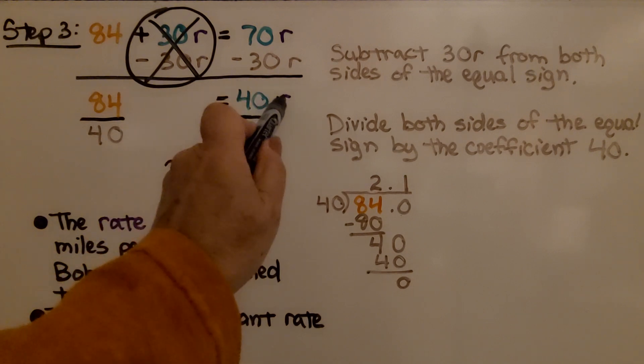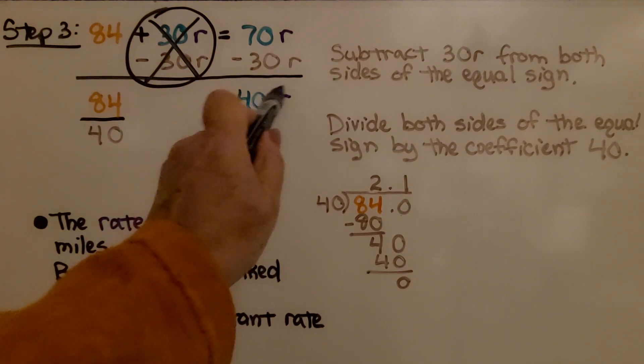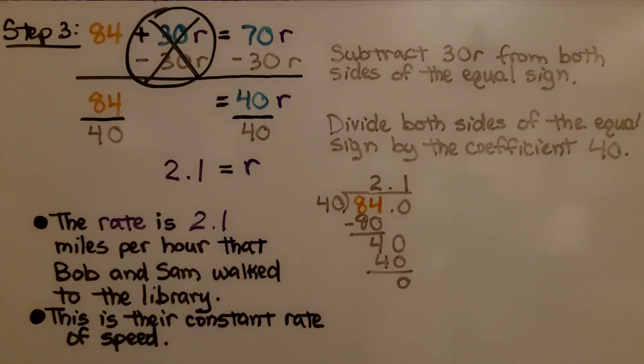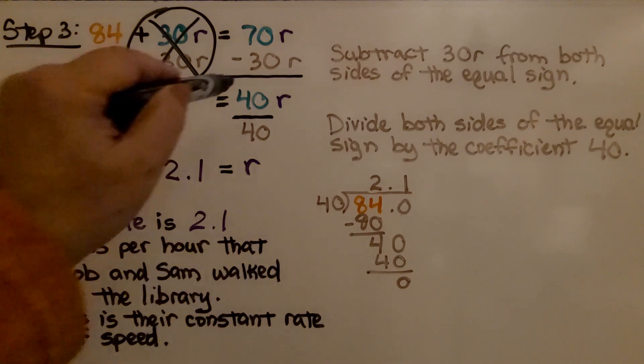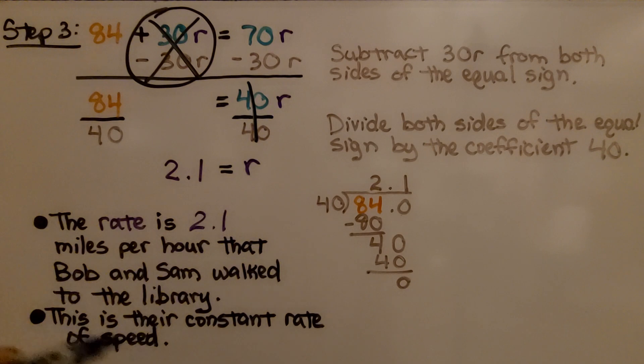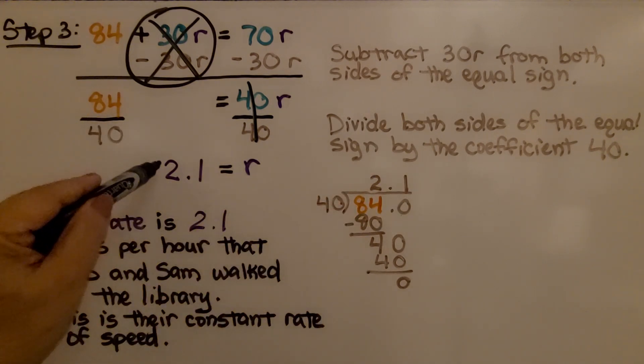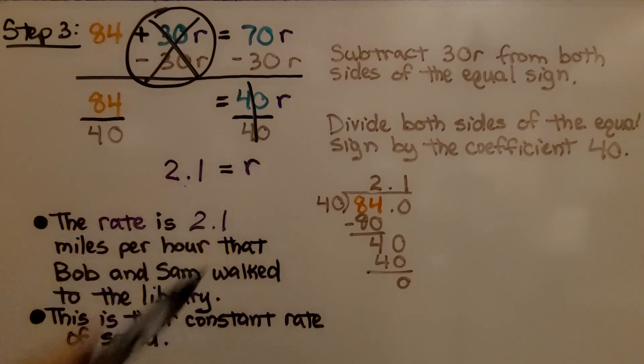Now, since this is 40 times some unknown rate r, the inverse of multiplication is division. So we're going to divide both sides of the equal sign by that coefficient 40. 40 divided by 40 is 1, so we have 1r here. And 84 divided by 40 is 2.1. We know 2.1 equals r. The rate is 2.1 miles per hour that Bob and Sam walked to the library. This is their constant rate of speed.